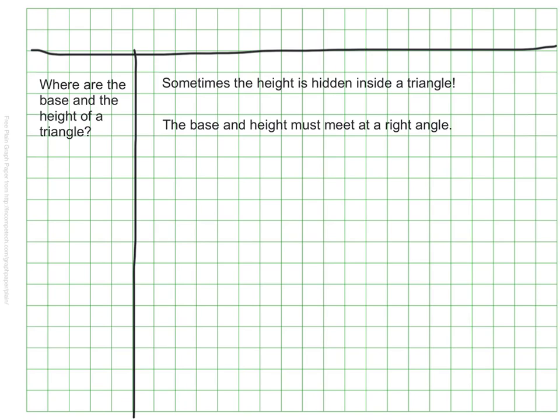That means that when they meet, they must meet in this L shape. This is our right angle, it's 90 degrees, so they have to meet in a corner like that.